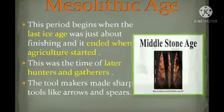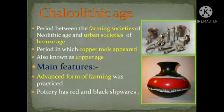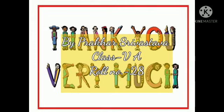The Neolithic age begins with the introduction of agriculture. In this age, the wheel was invented, which was the most noteworthy milestone of mankind. In the Chalcolithic age, copper tools appeared. Thank you.